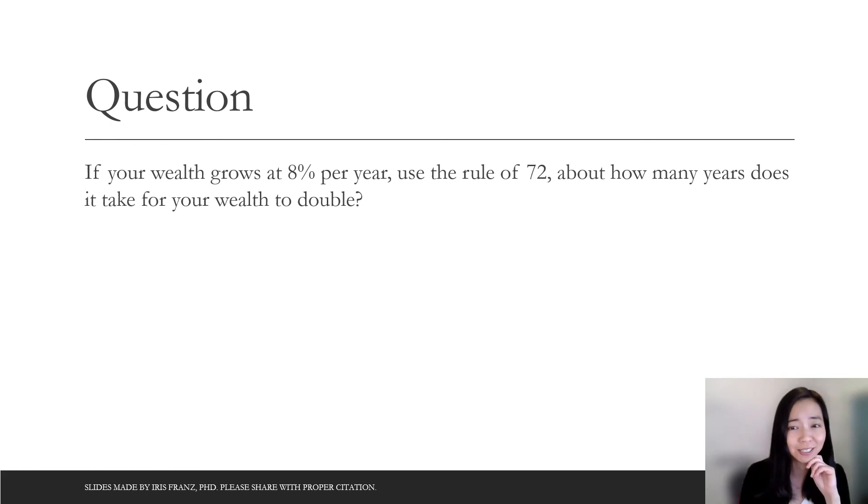Now with the rule of 72, what if your growth rate is 8%, how many years does it take for your wealth to double? Using the rule of 72, you will do 72 divided by 8. That gives you approximately 9 years.